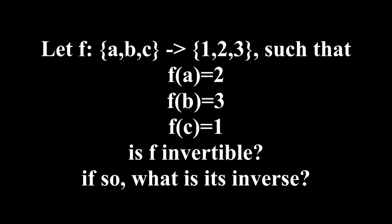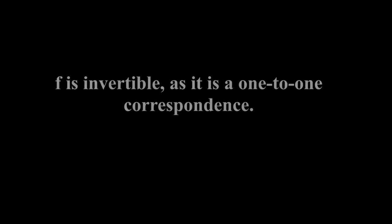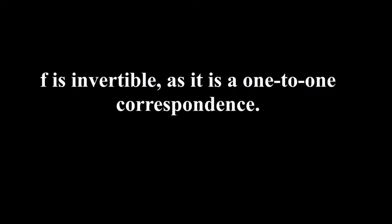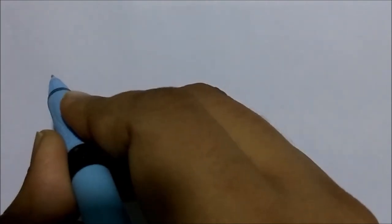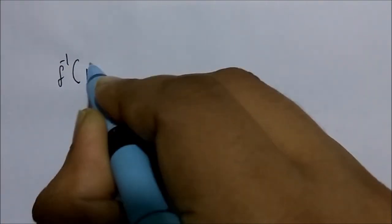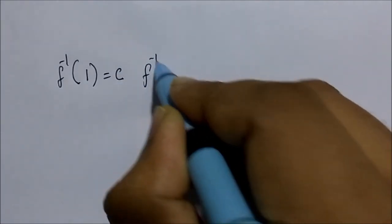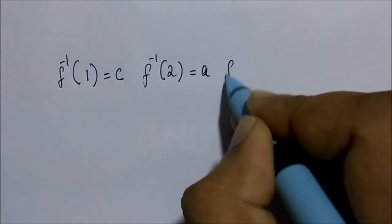Let f be the function from {a, b, c} to {1, 2, 3} such that f(a)=2, f(b)=3, and f(c)=1. Is f invertible, and if so, what is its inverse? f is invertible because it is a one-to-one correspondence — both one-to-one and onto. The inverse is: f⁻¹(1)=c, f⁻¹(2)=a, and f⁻¹(3)=b.